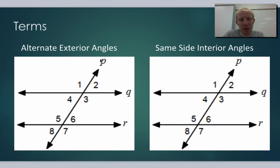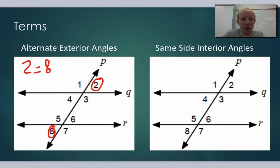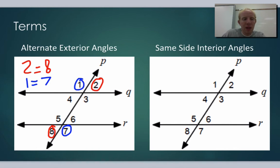Another theorem we proved in class is the alternate exterior angle theorem, which comes from the alternate interior angle theorem. Alternate exterior means the angles are on opposite sides of the transversal and outside the two parallel lines. For example, two and eight are alternate exterior angles — on alternate sides of the transversal and exterior to the parallel lines. We showed in class that they are equal. Likewise, one and seven are also alternate exterior angles and equal to each other. You can label this AEA in your proofs.